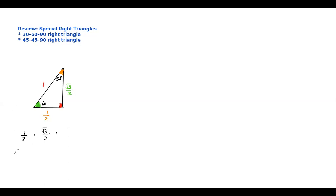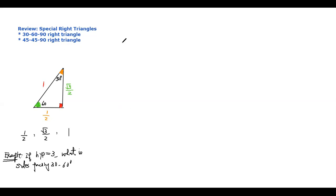So if the problem changes — for example, if the hypotenuse equals three — now what is the side facing the 30 degrees and the 60 degrees? Based on this ratio, the hypotenuse is three, so that means you multiply everything by three. The hypotenuse is three. The side facing the 60 degrees angle is three times square root of three over two, and the side facing the 30 degrees angle is three-halves.